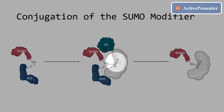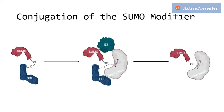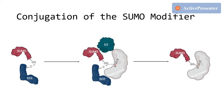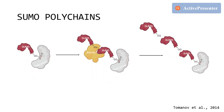Other motifs that are targeted for sumoylation have also been characterized, but will not be discussed here. Even though SUMO conjugating enzymes might be enough to conjugate SUMO to the target protein, the conjugation step can be enhanced by an E3 ligase. SUMO E3 ligases are able to recognize substrate, allowing for a more specific process. In plants, proteins that mediate the formation of SUMO polychains have been described and designated as E4 ligases.